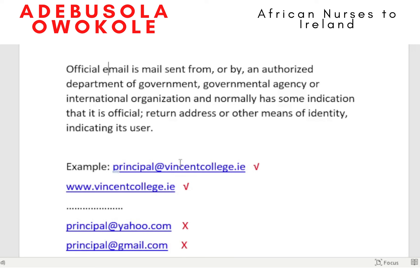What makes this email official? It means vincentcollege is a website — the official website of the institution. If you type www.vincentcollege.ie, you can go to the site, click the link, and pull out the principal's details and verify them. That's what NMBI wants to reduce stress on their part for verification purposes.